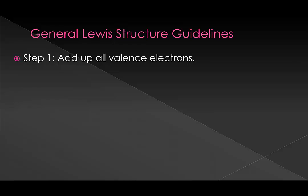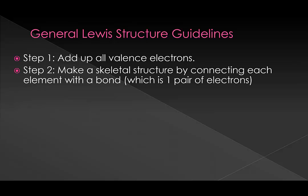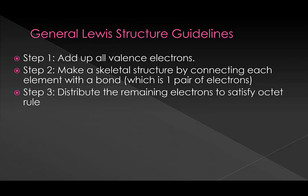So remember we want to add up all of our valence electrons, make a skeletal structure by connecting each of the elements with one bond, distribute the remaining electrons to satisfy the octet rule, which may mean that we then need to add double or triple bonds.